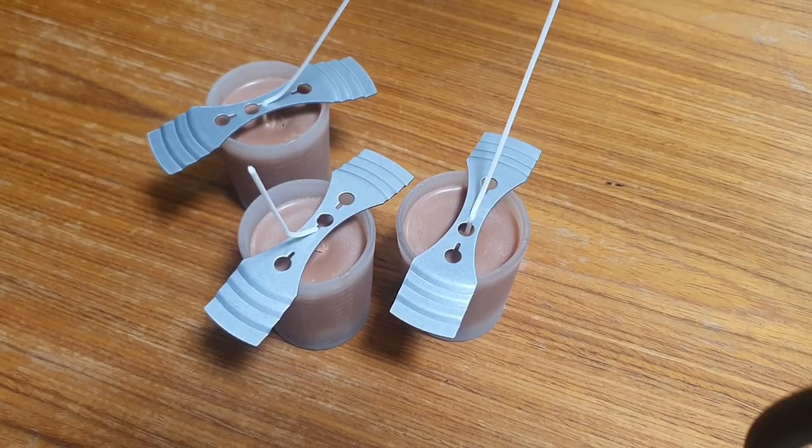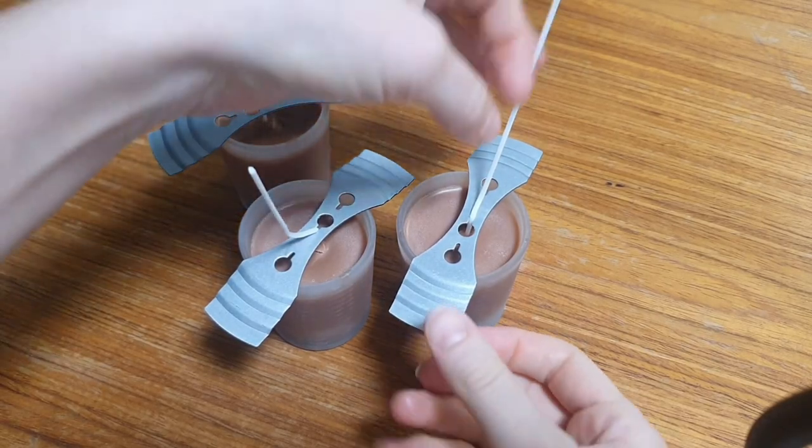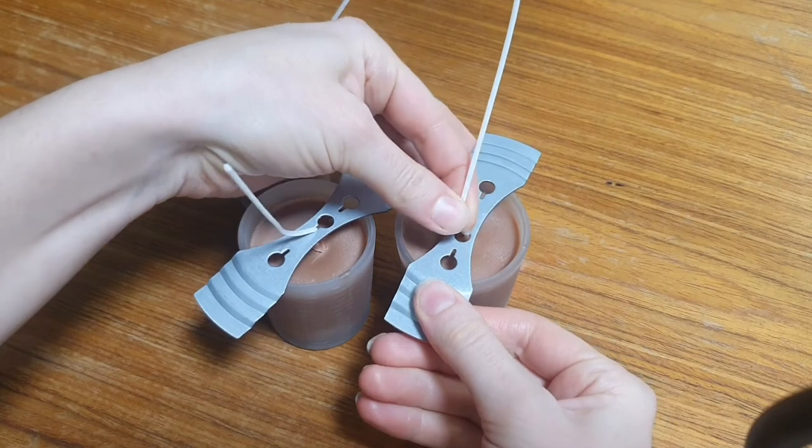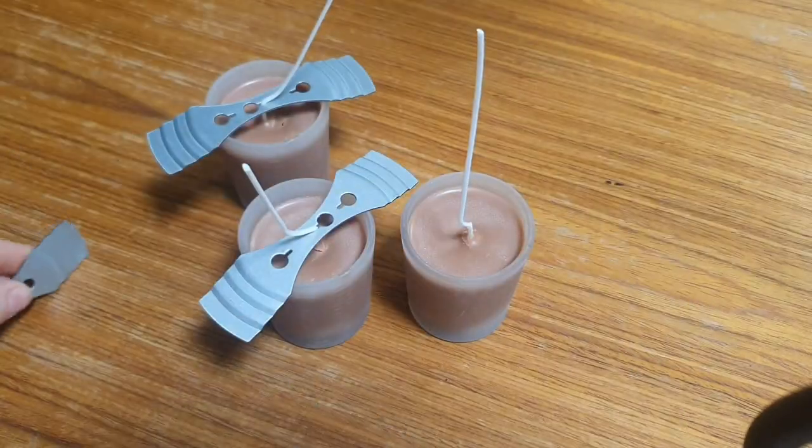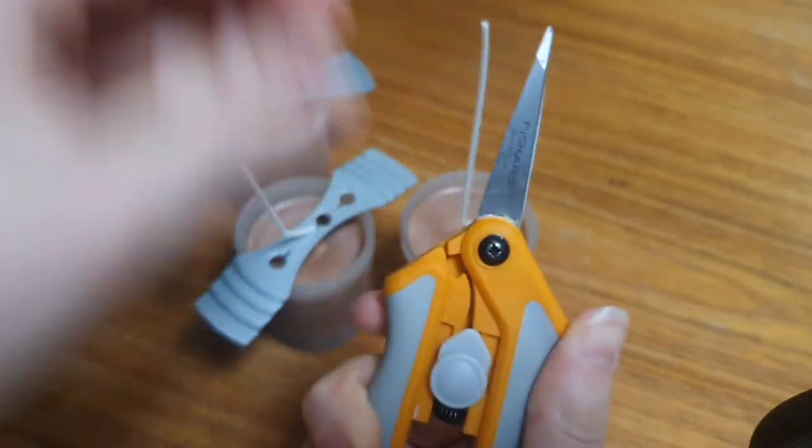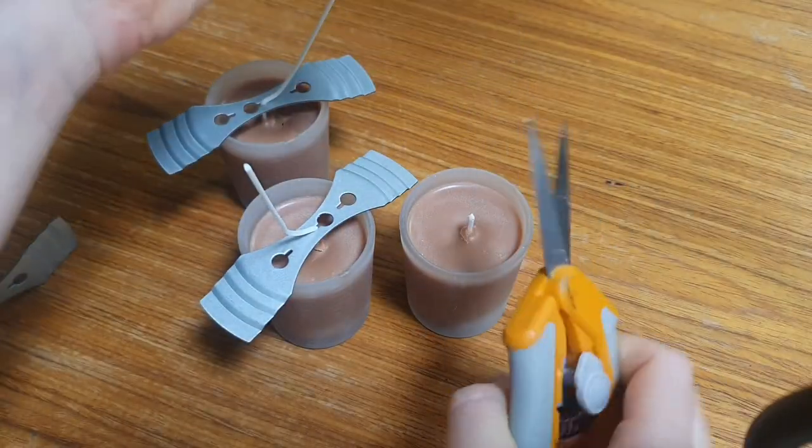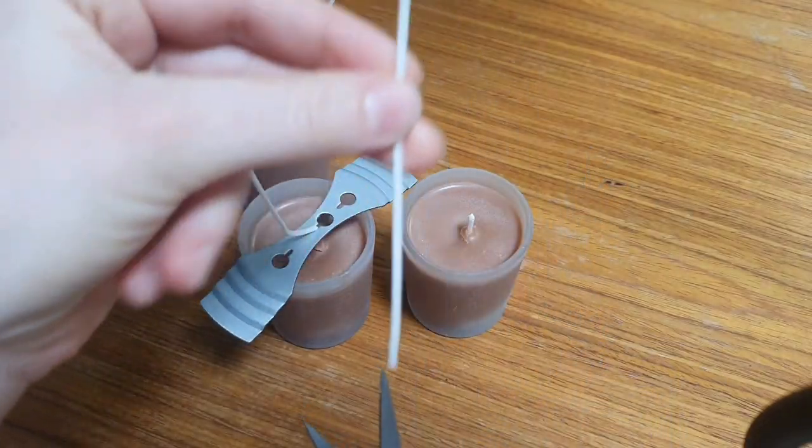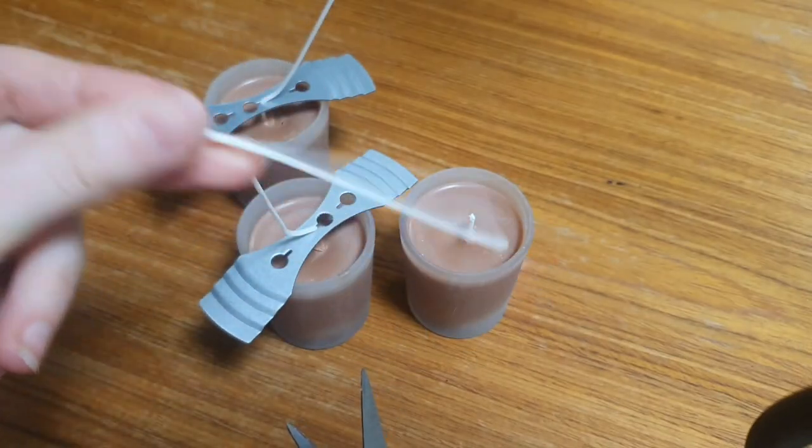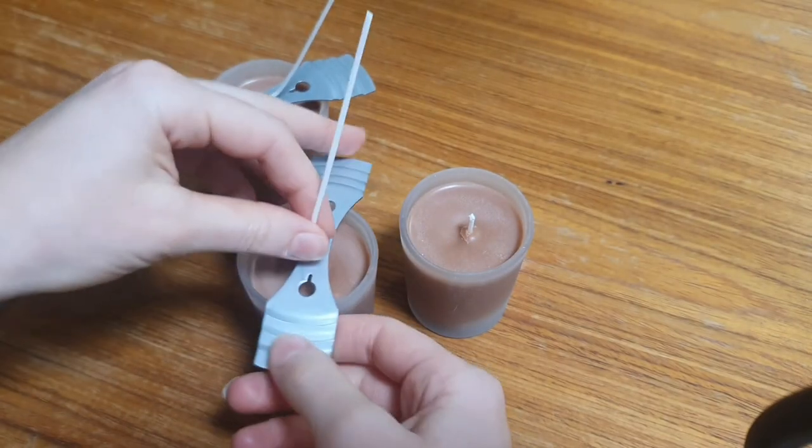When your candles have cooled down and hardened, what you can do is you can just remove the wick tabs like this. Pull that off, take a pair of wick scissors and snip off the excess, and save the extra wick because it comes in very handy for other projects.